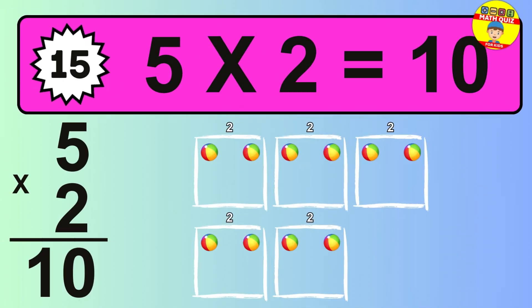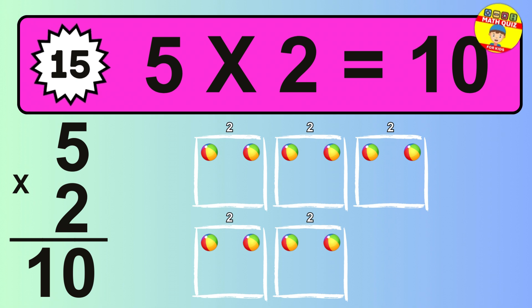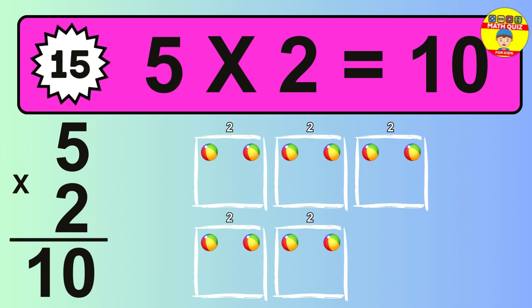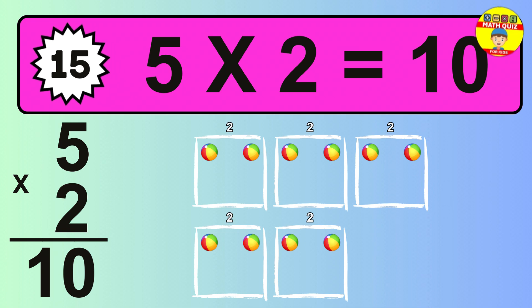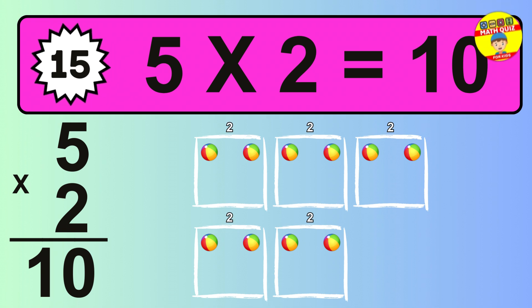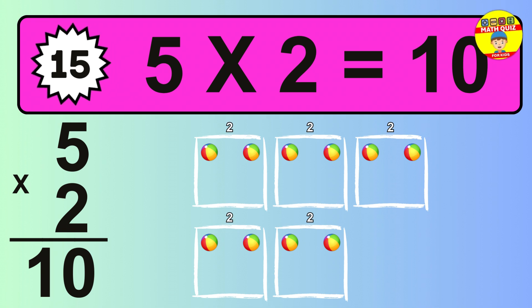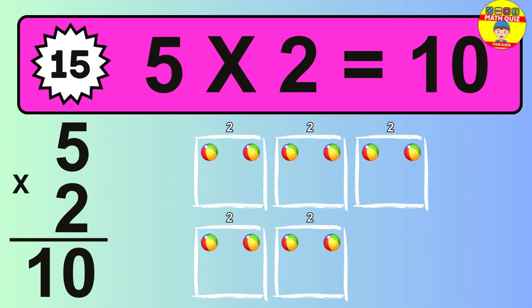The answer is 5 times 2 is 10. To calculate, we have 5 groups with 2 balls each one. So, how many balls do we have? 10 balls.